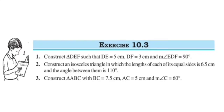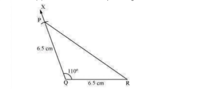Now see Question 2: Construct an isosceles triangle PQR in which the length of each of its equal sides is 6.5 centimeters and the angle between them is 110 degrees. So PQ equal to QR equal to 6.5 centimeters. See the steps: draw the line segment QR of length 6.5 centimeters. At point Q, draw a ray QX making an angle of 110 degrees with QR. Taking Q as center, draw an arc of 6.5 centimeter radius; it intersects QX at point P. Join P to R to obtain the required triangle PQR.